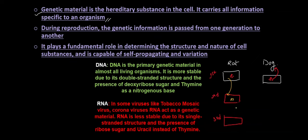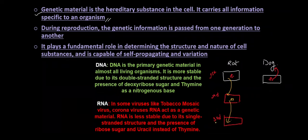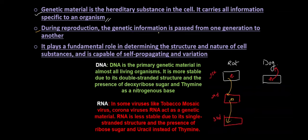The genetic material passes down from one generation to the other. During reproduction, the genetic information is passed down from generation to generation. It plays a fundamental role in determining the structure and nature of cell substances, and it is capable of self-propagation and variation. Genetic material is the main determining factor that determines everything about the species or the type of cell.